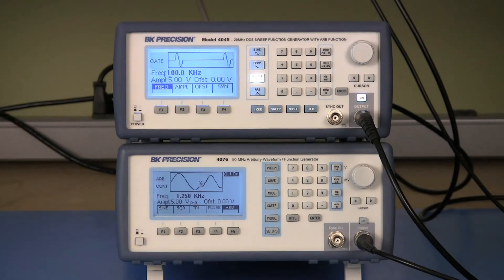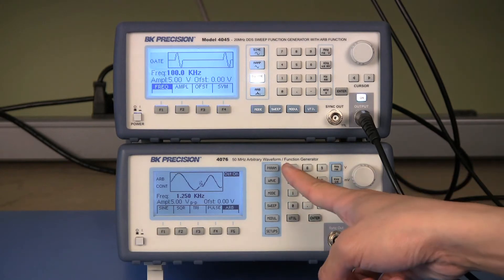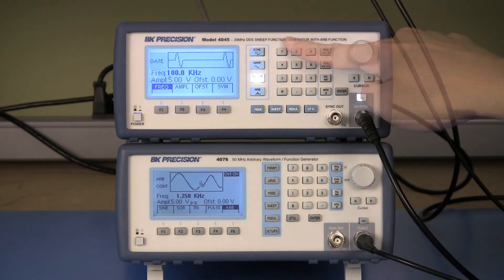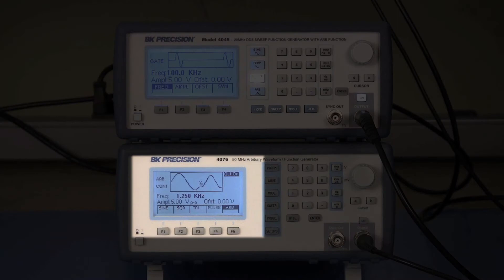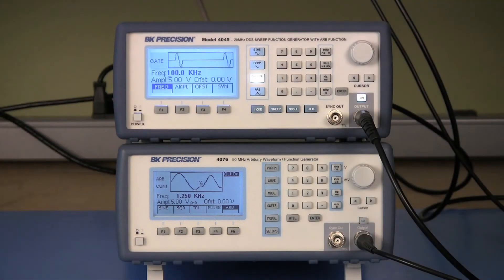Here is an example. I have a BNK Precision 4076 and a 4045 here. On the 4076, I have preloaded to the arbitrary waveform memory a signal with some added noise in between, which looks like the following.